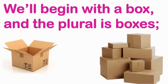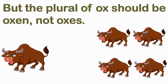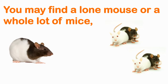The poet says we will begin with the box and the plural is boxes. Students, hope you have remembered about singular and plural. One noun is called singular and more than one is called plural. A single box is called a box, but when it is in more quantity, we call it boxes. But the plural of ox should be oxen, not oxes. If box is boxes, then ox should be oxes — so here we find something strange in the English language.